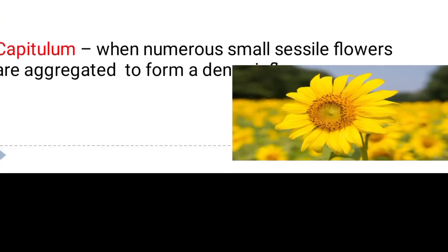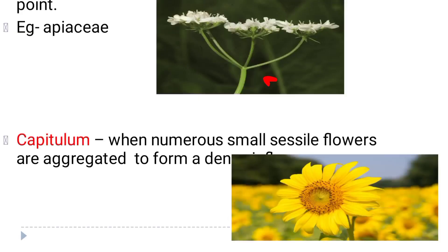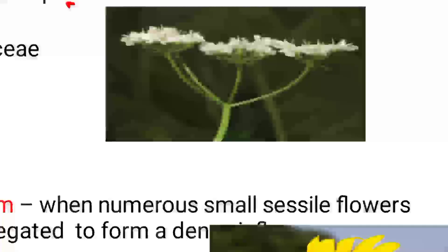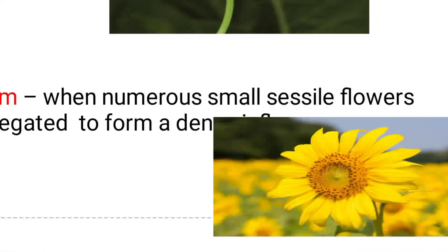Now we have capitulum inflorescence. In capitulum, numerous sessile flowers cluster together to form a dense structure. The example is sunflower. If you see here, sunflower has individual flowers arranged within a structure — that is called capitulum inflorescence.